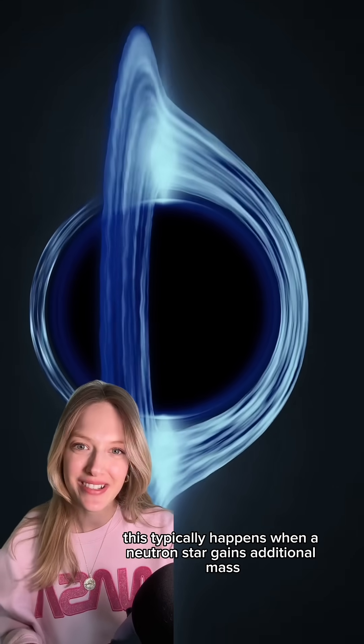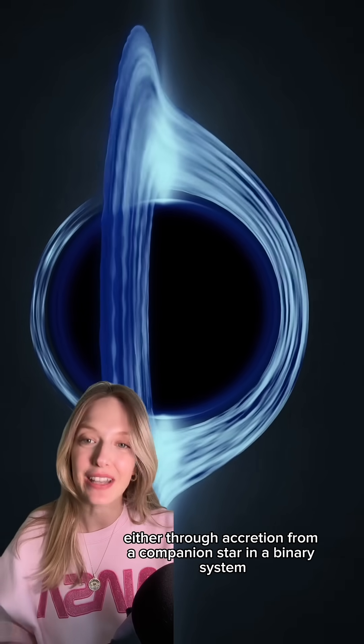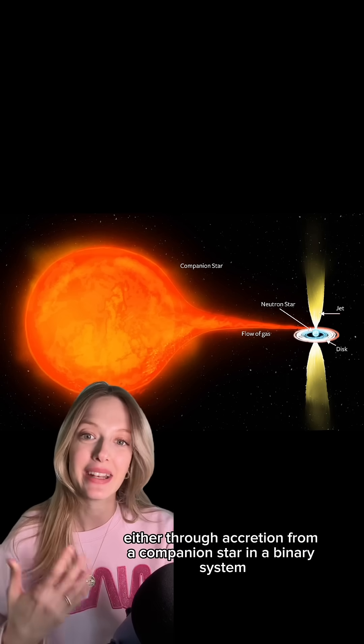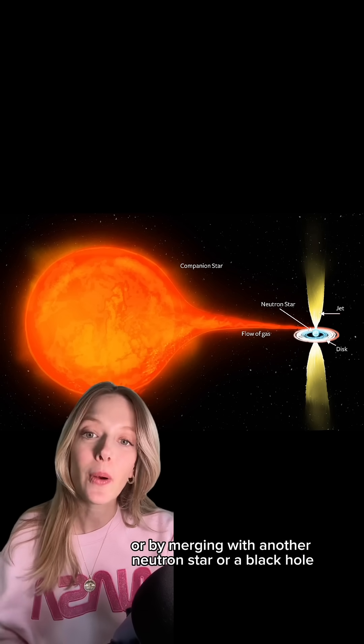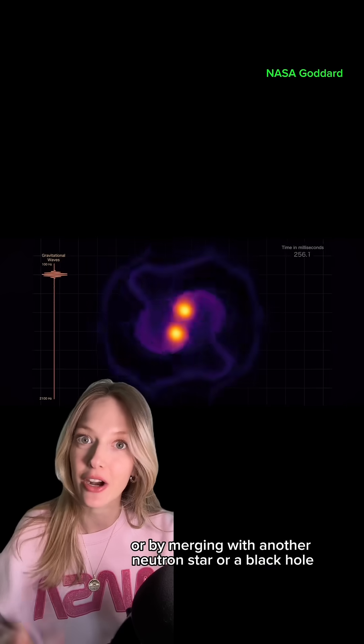And it'll ultimately collapse into a black hole. This typically happens when a neutron star gains additional mass, either through accretion from a companion star in a binary system, or by merging with another neutron star or a black hole.